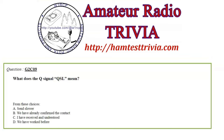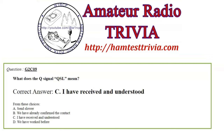Question 9: What does the Q signal QSL mean? Choices: A) Send slower, B) We have already confirmed the contact, C) I have received and understood, D) We have worked before. QSL without a question mark actually means 'I have received and understood.' It's also used on SSB, and it comes across well even with a low signal report.